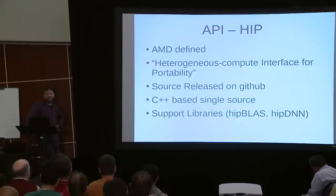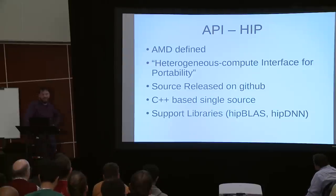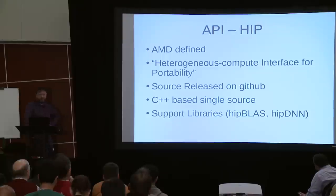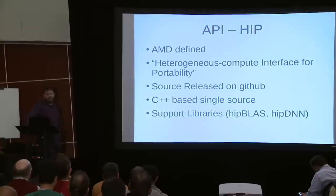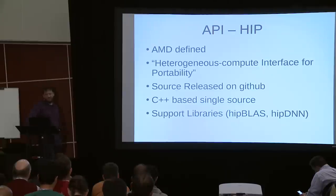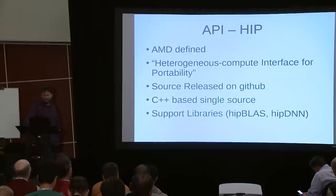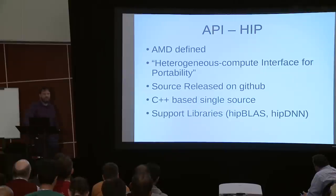There's HIP, which is AMD's — I can't believe it's not CUDA — Heterogeneous compute Interface for Portability. The name just pretty much rolls off the tongue. It has its source code released on GitHub under an open-source compatible license. It's also C++ based single source. It has some support libraries: hipBLAS, hipDNN. It's a pretty good attempt to recreate the CUDA style.